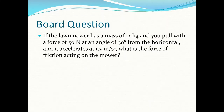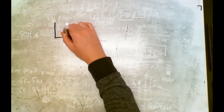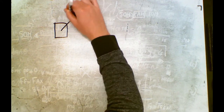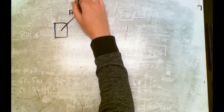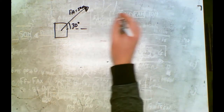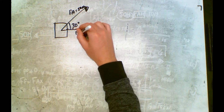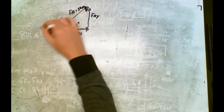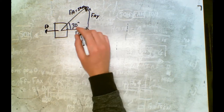Let's try a board question. Pause the video and try this one on your own. A lawnmower has a mass of 12 kg, and you pull it with a force of 50 N at an angle of 30 degrees — it accelerates at 1.2 m/s². What is the force of friction? This one is a little different because it's accelerating, but our free body diagram is similar. We have a force applied of 50 N at 30 degrees, with a force applied in X, force applied in Y, and a force of friction smaller than the force applied in X.